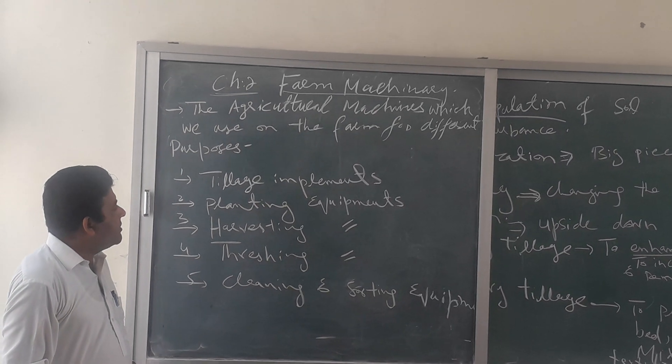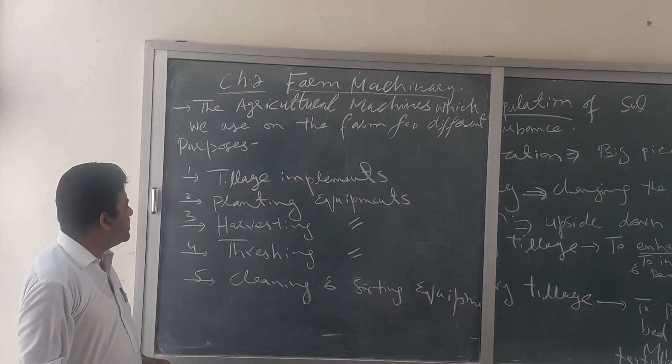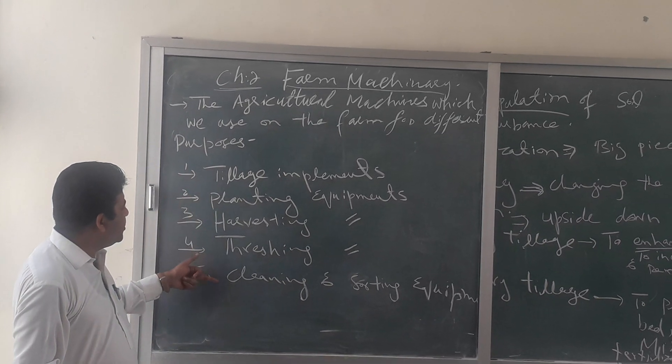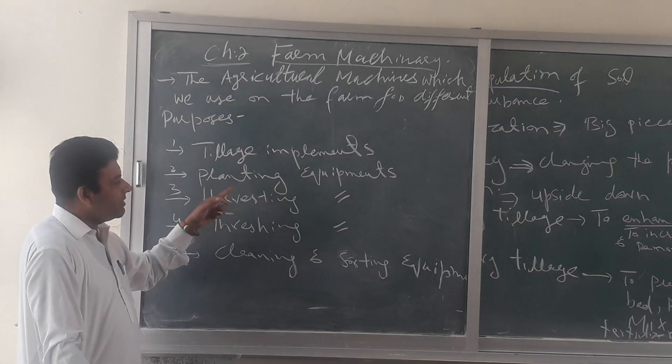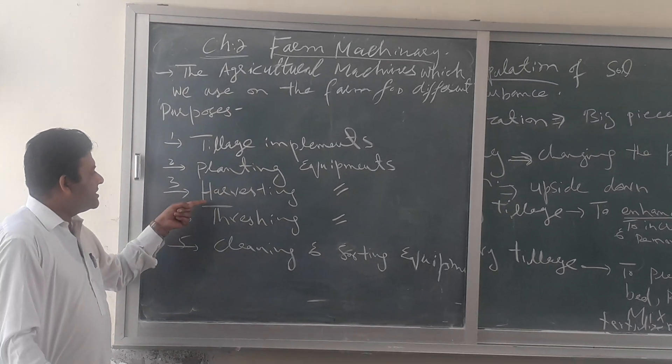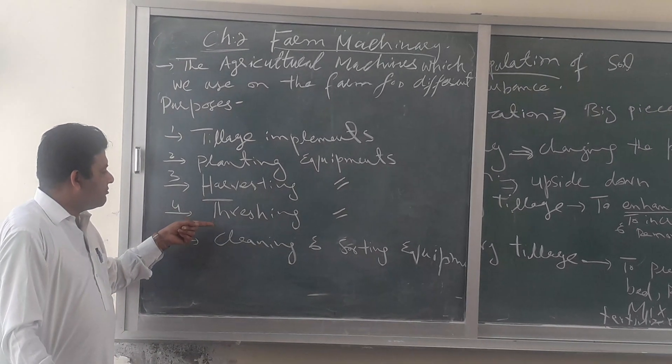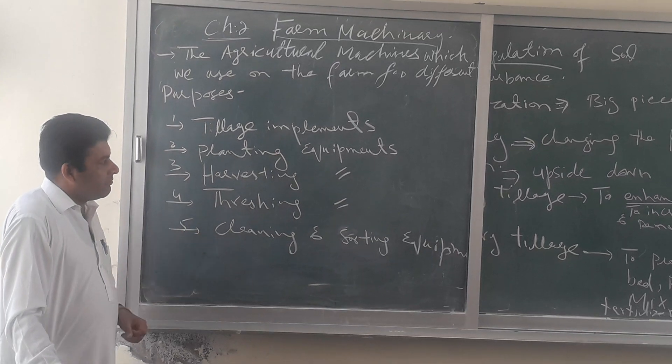In your course we will discuss these five types of machines: first is tillage implements, planting equipments, harvesting equipments, threshing equipments, and cleaning equipments.